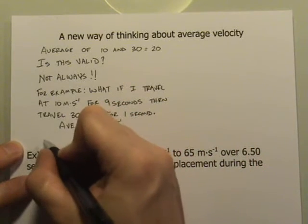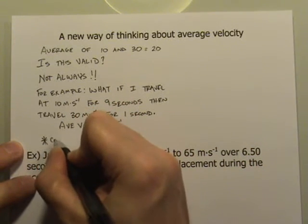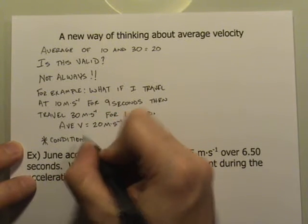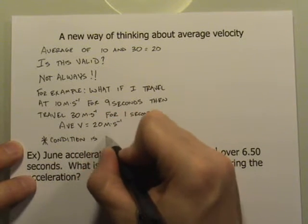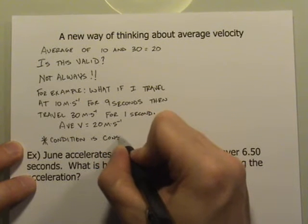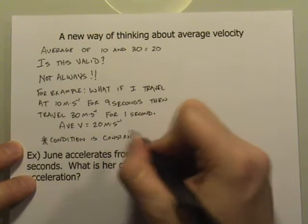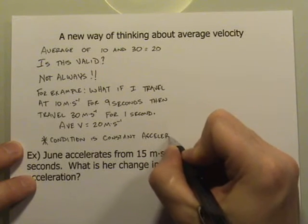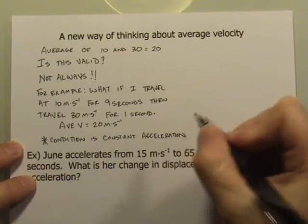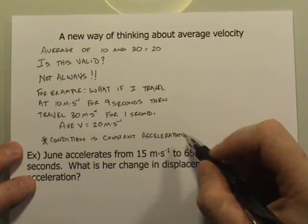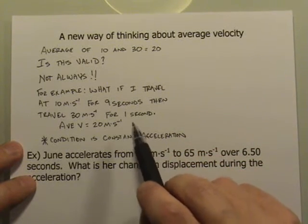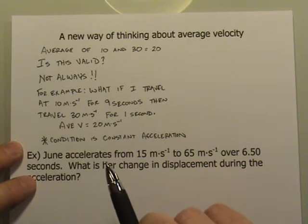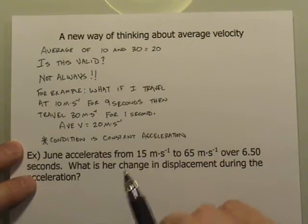So the condition, this is extremely important, the condition is constant acceleration. If I don't change the value of the acceleration, if I smoothly make the change, then it's completely legitimate to simply add the final and initial velocity and cut them in half to come up with the new version of an equation for the average velocity.